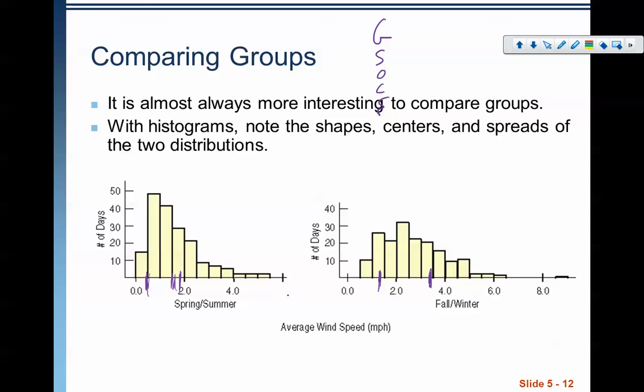So we're making comparative statements about the two distributions. And again, in a full description, we need to address every GSOC with a comparative statement. With a comparative statement, so we need to say the shape of this versus the shape of this, the center of this versus the center of this, the spread of this versus the spread of this, right?